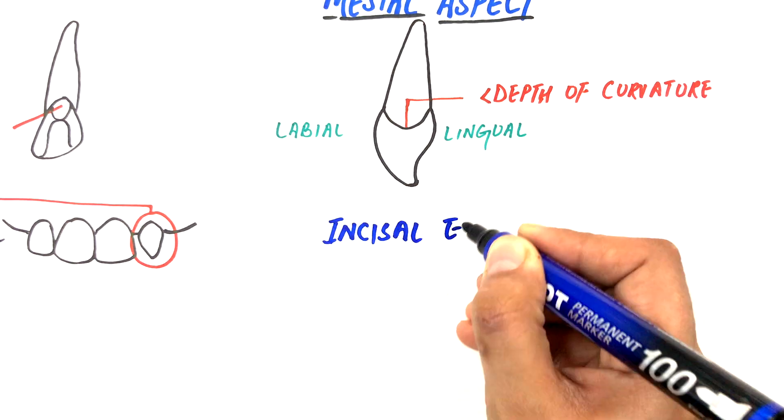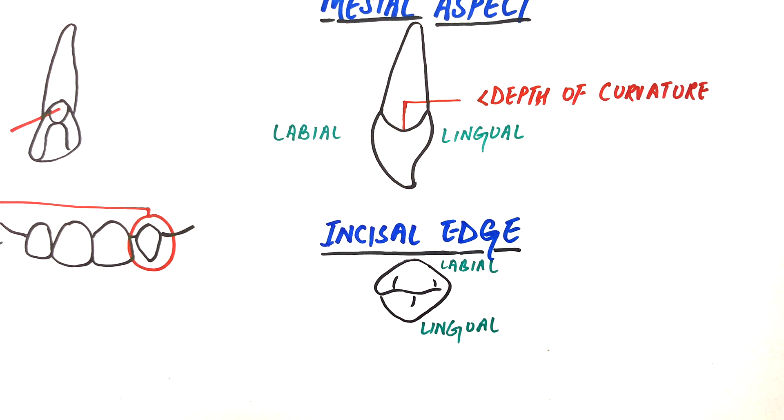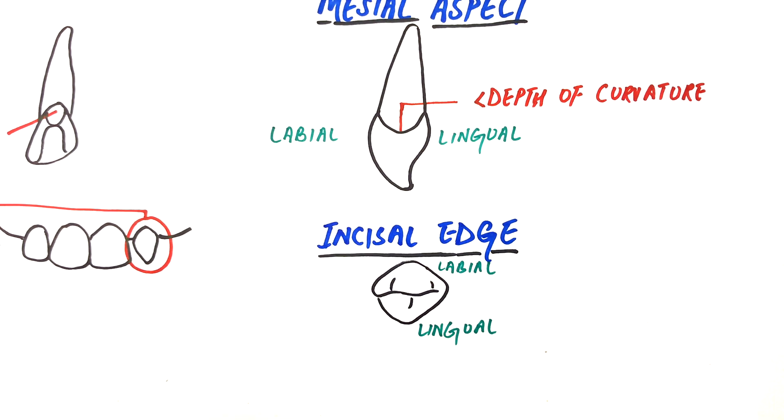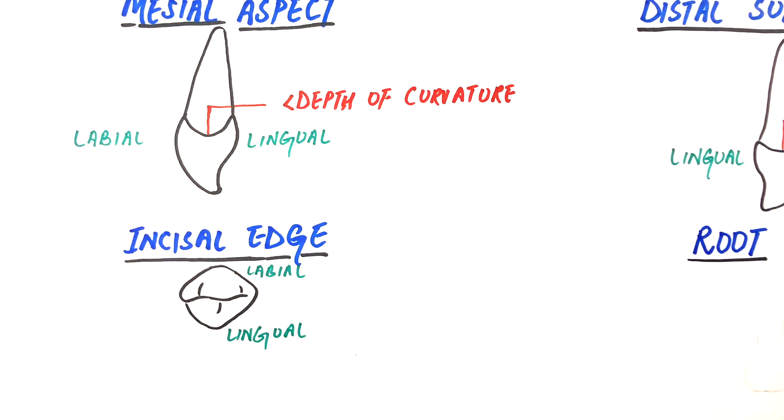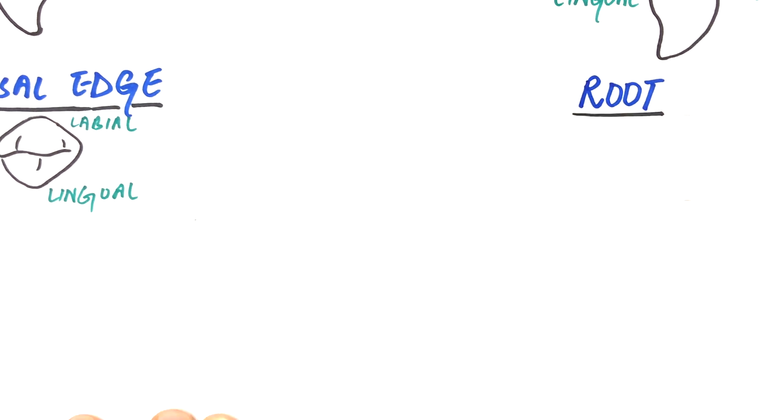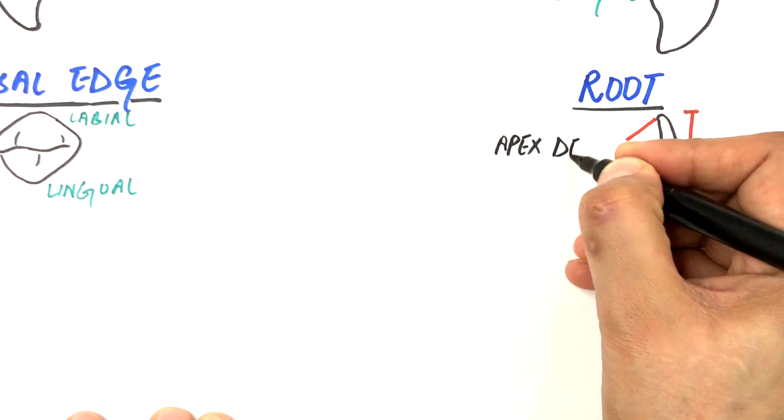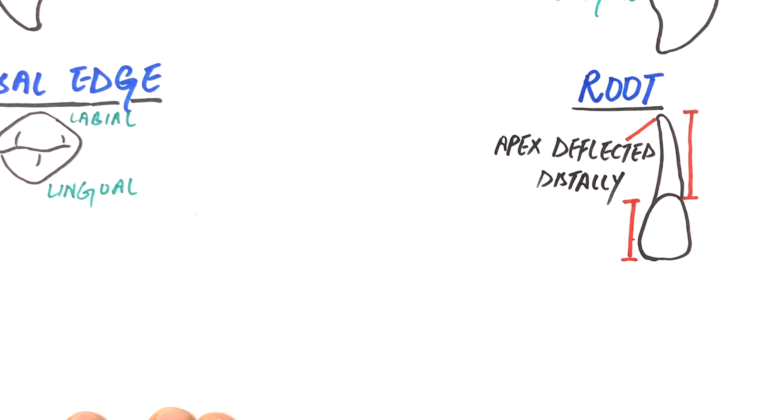Now coming to the incisal view, all maxillary lateral incisors exhibit more convexity labially and lingually than do the maxillary central incisors. The tooth has a single root which is wider labiolingually and narrower mesiodistally. The root length is not equal to the crown length as in maxillary central incisors and is longer in relation to the crown length. The apex is relatively sharper than that of the central incisor and it may be deflected distally at the apical third.